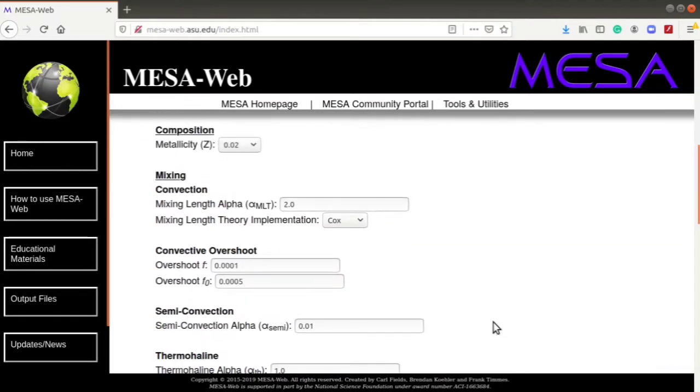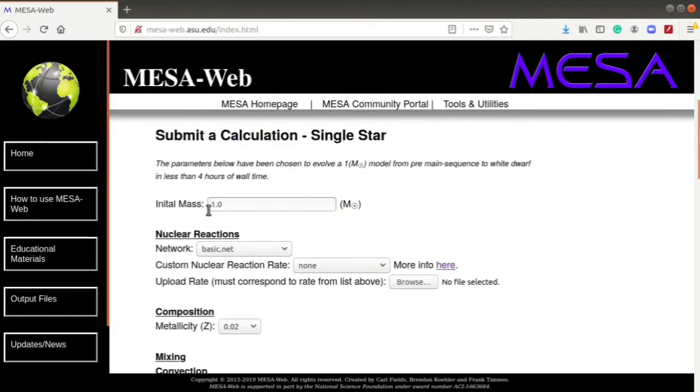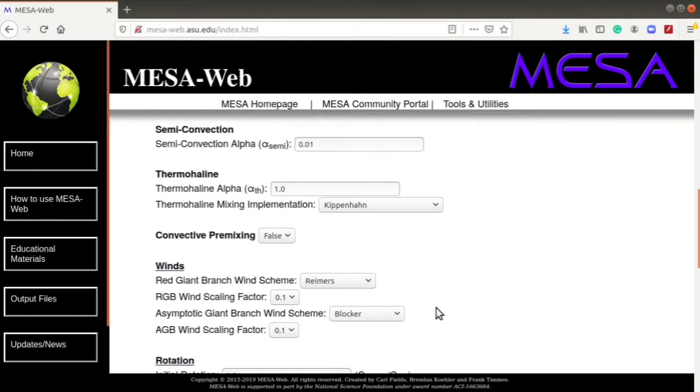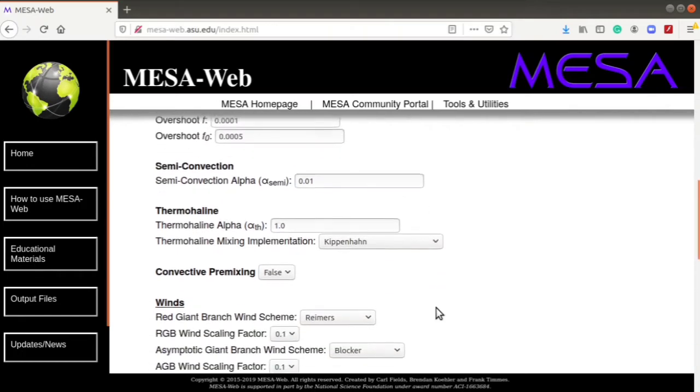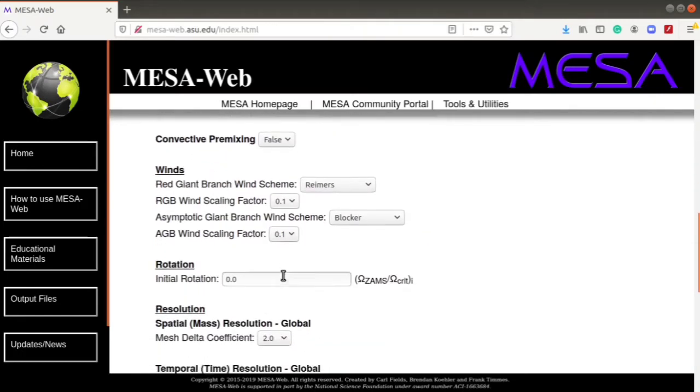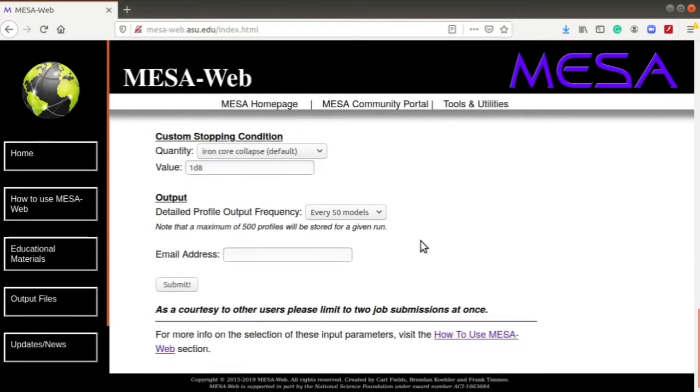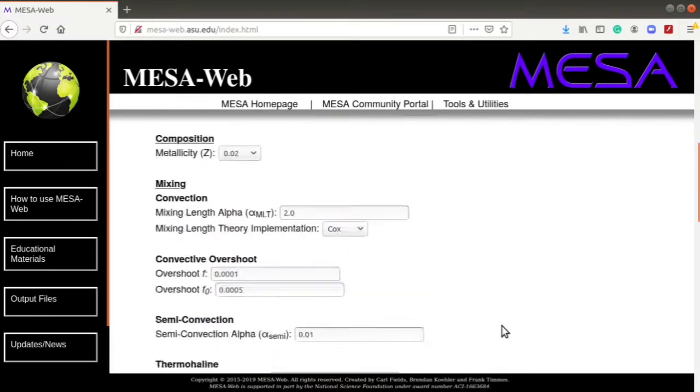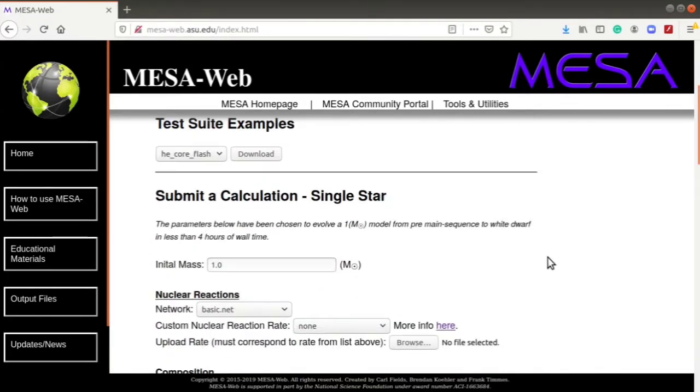For example, I have tried changing the initial mass, the set of nuclear reactions, and the metallicity. The other parameters like convection mixing, mass losses, rotation, resolution, etc. I have kept the same. Here I provided the email address where the output of the simulation of the entire star evolution was emailed to me and I downloaded it from there.